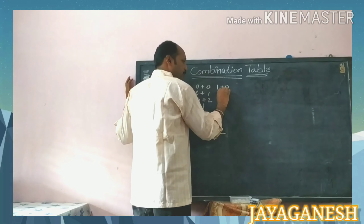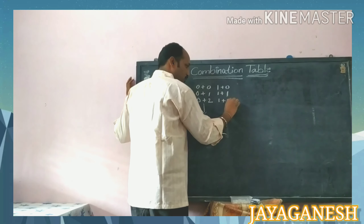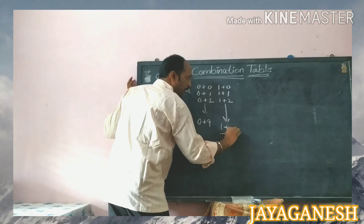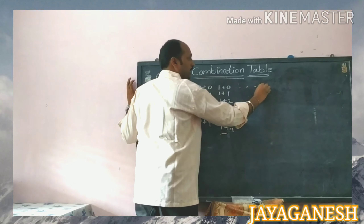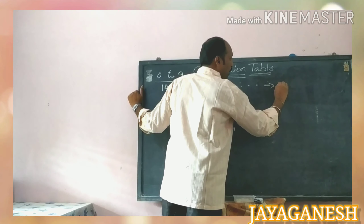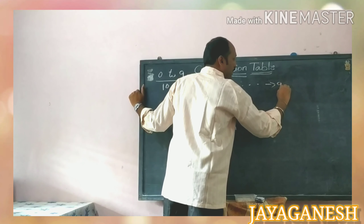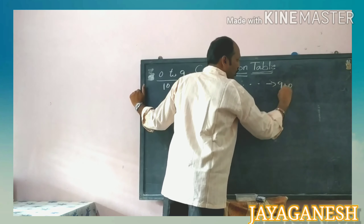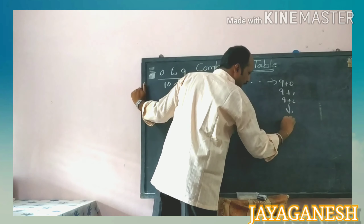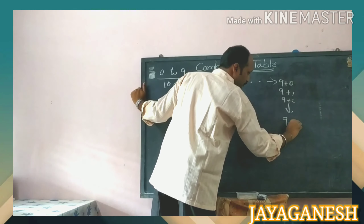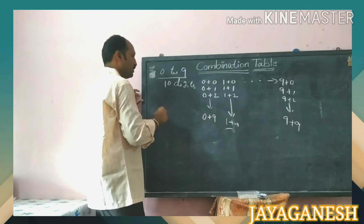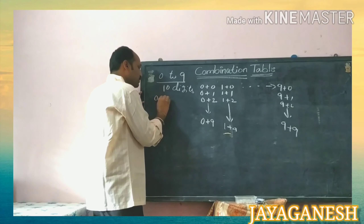Next, 0 is completed. The next digit — what is the next digit? 1. Then 1 plus 0, 1 plus 1, 1 plus 2, till it will go to 1 plus 9. Like that it will go all the way till 9 plus 0, 9 plus 1, 9 plus 2, all the way till 9 plus 9.